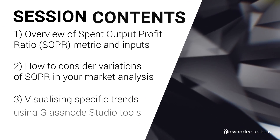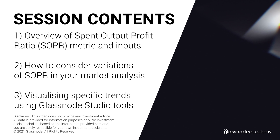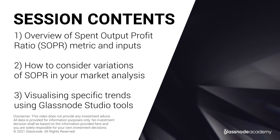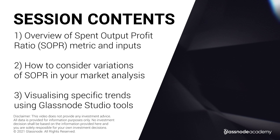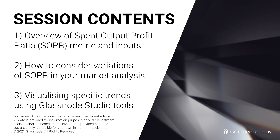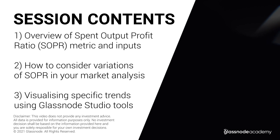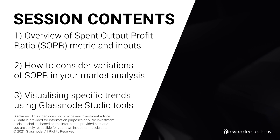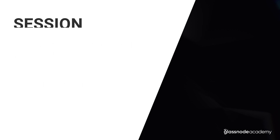In this session we'll look at an overview of the Spent Output Profit Ratio metric and what the different inputs are that go into its construction. We'll look at the different variations of SOPR and consider it in both bullish and bearish market structures, and then we'll use Glassnode Studio to visualize some of the trends and see how we use this tool in practice.